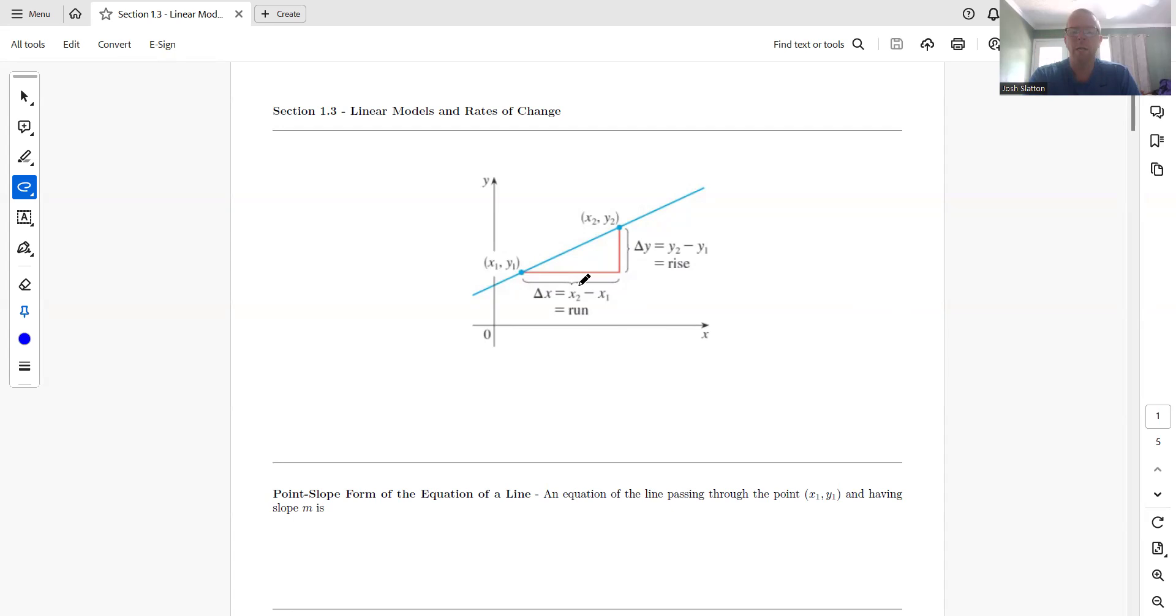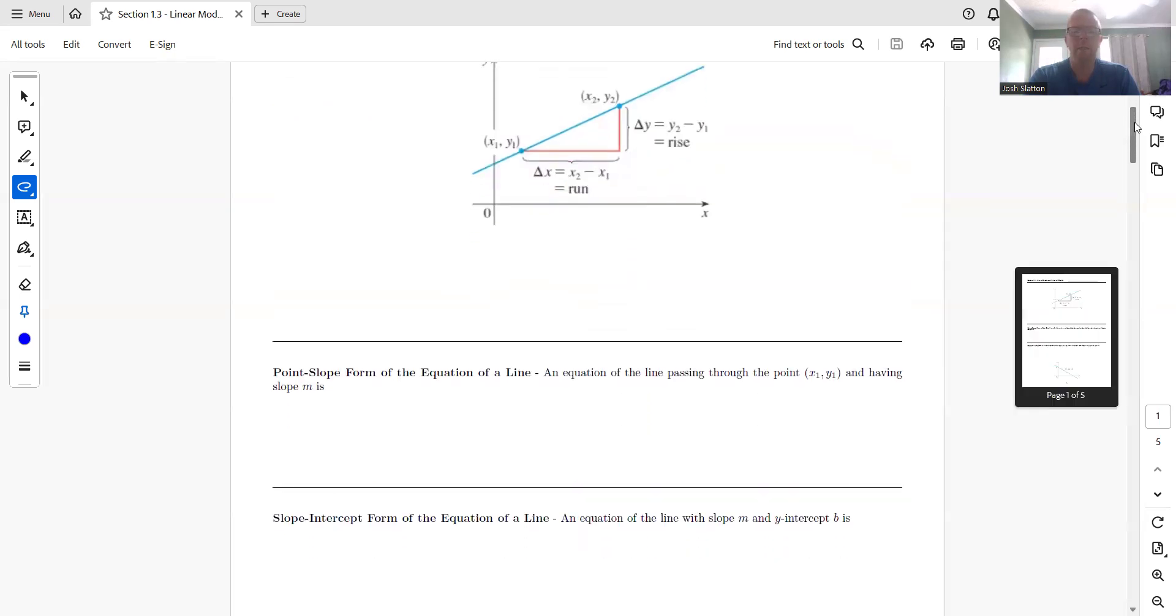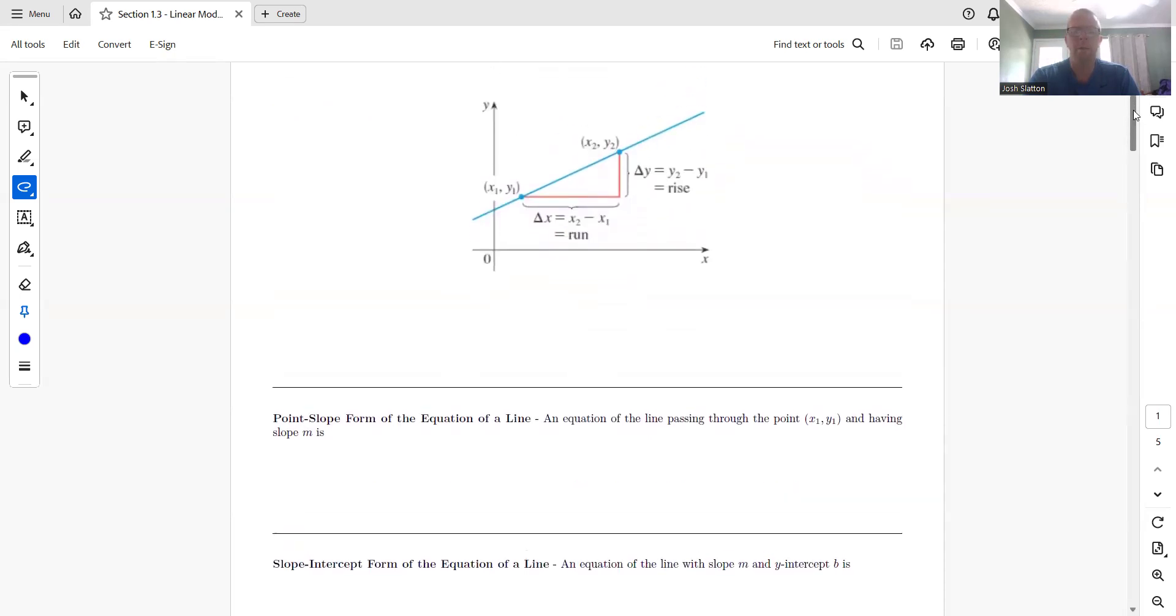So changing y over changing x is what we mean when we talk about slope. And so one way that we can write the formula. So slope is, you could kind of a way to remember it rise over run.